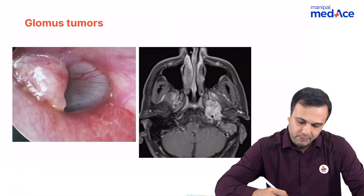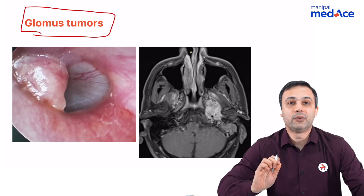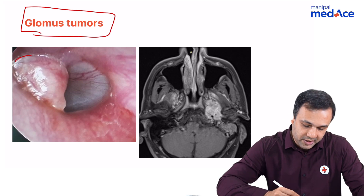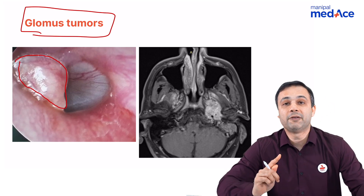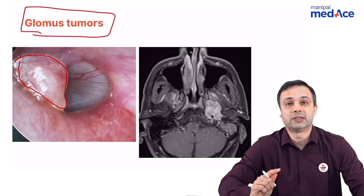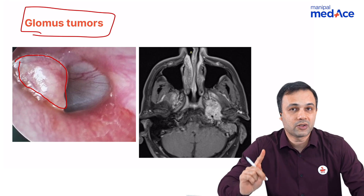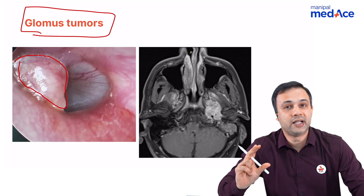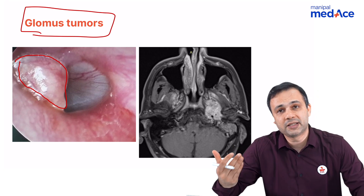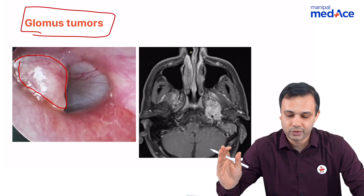The most common cause of pulsatile tinnitus is a glomus tumor in the ear. If you look at the external auditory canal in this patient, you see a nice mass — and never try to biopsy a glomus, as it is going to bleed profusely. If a patient presents with bleeding from the ear, think in terms of a glomus tumor.